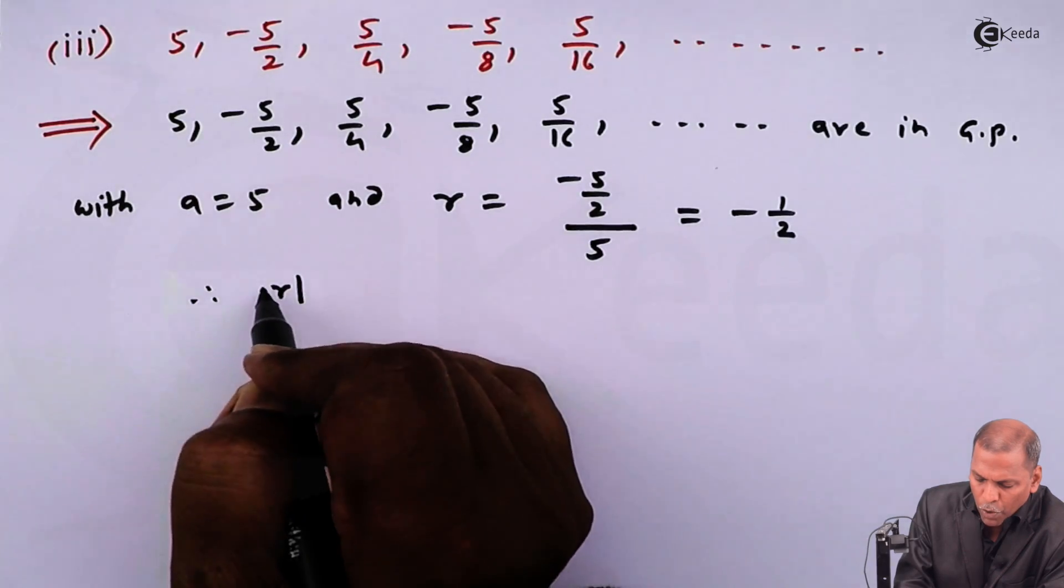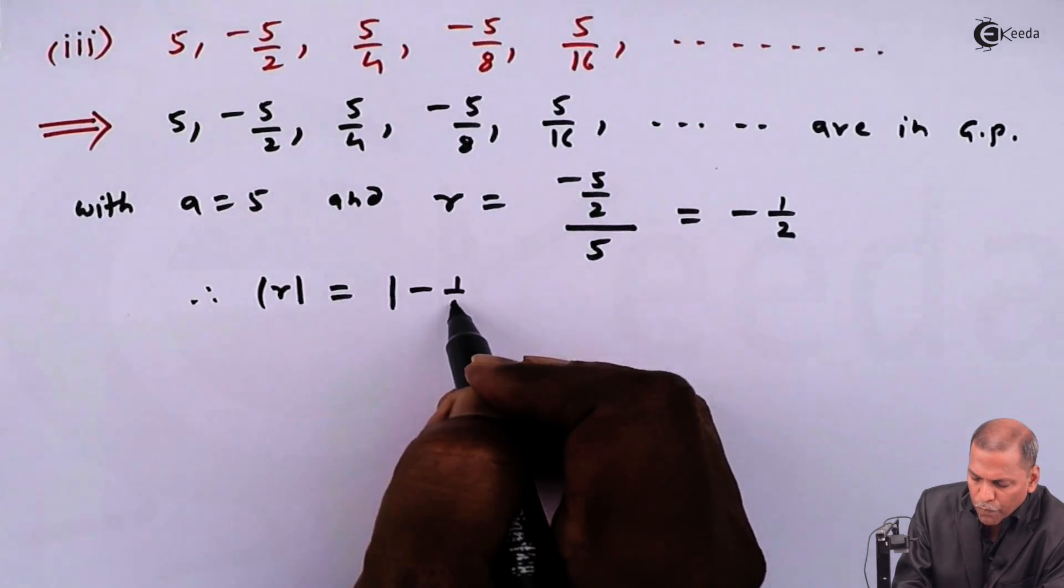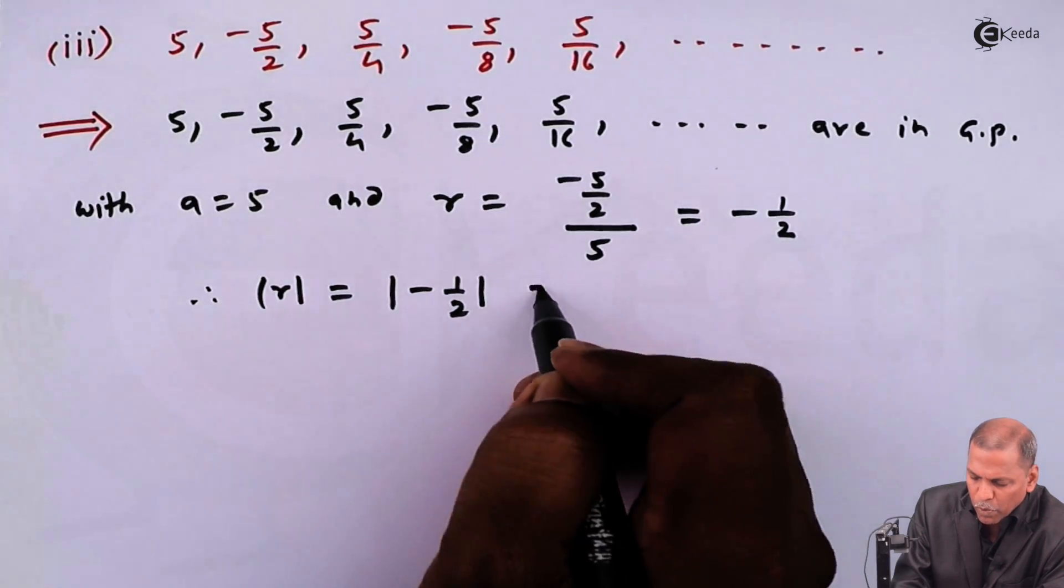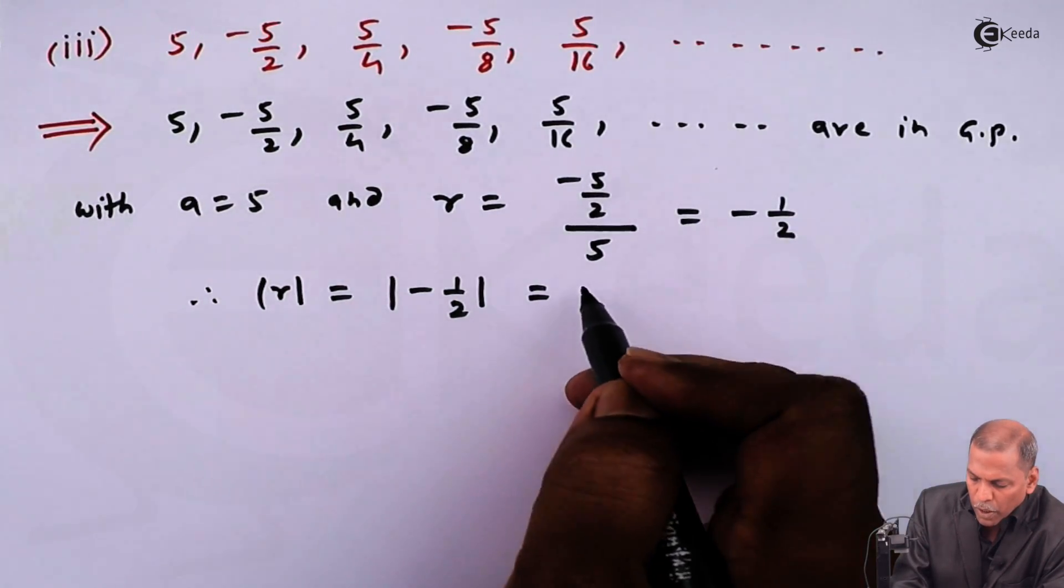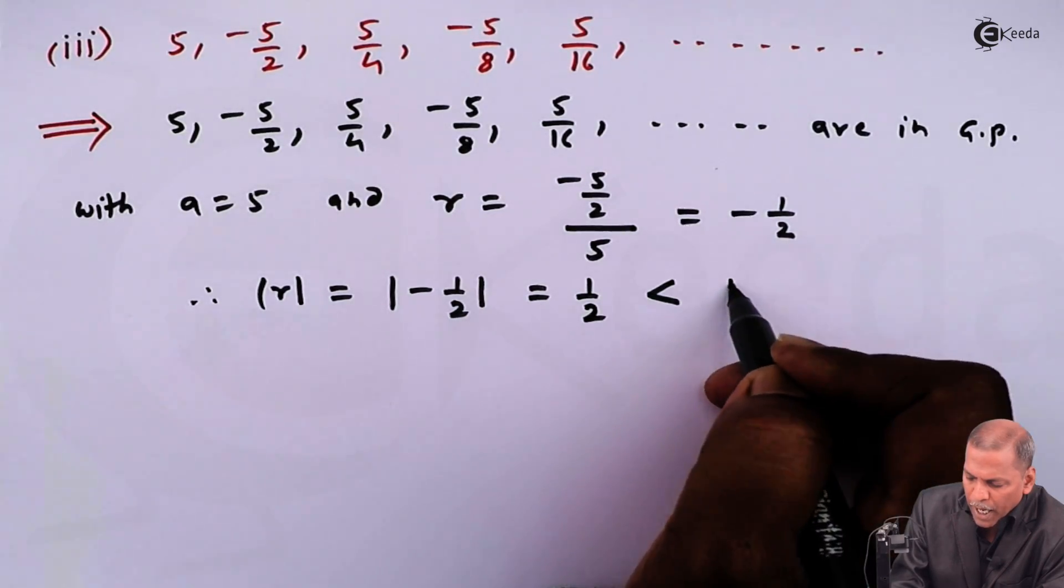Therefore modulus of r equals modulus of -1/2, equals 1/2, which is less than 1.